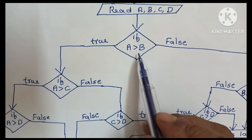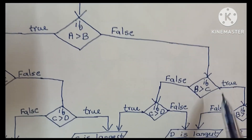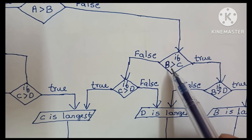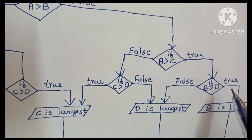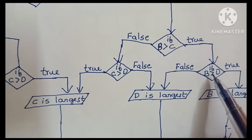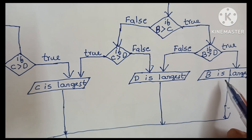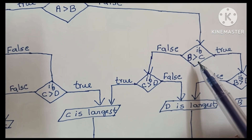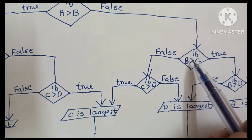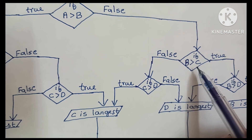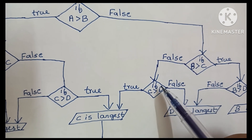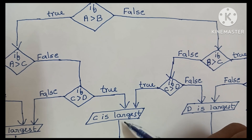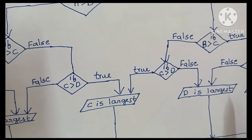If A greater than B is false, we compare B with C. If B greater than C is true, we compare B with D. If B greater than D is true, we print 'B is largest'. If false, we print 'D is largest'. If B greater than C is false, we compare C with D. If C greater than D is true, we print 'C is largest'. If false, we print 'D is largest'.